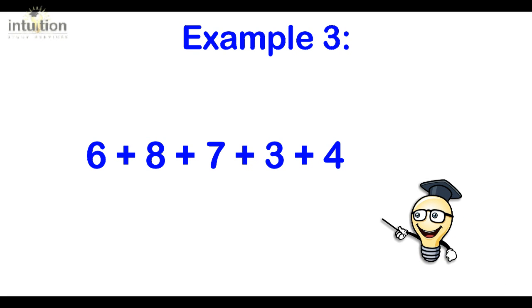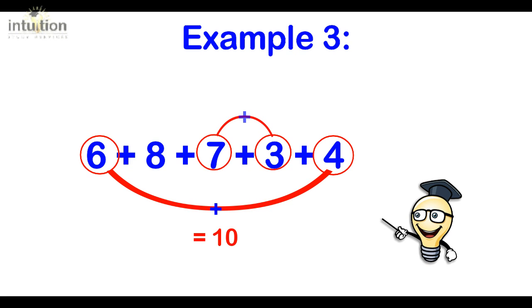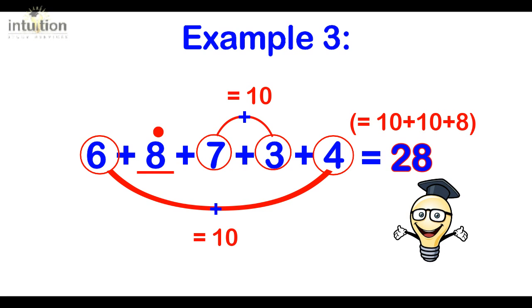Let's take a look at another example. So we've got 6, 8, 7, 3 and 4. Let's start by looking at the complements. The complement of 6 is 4, that makes 10. Then the complement of 7 is 3, that makes another 10. There's 20 and then we've got that 8 left over so that's 28. See how easy it is?